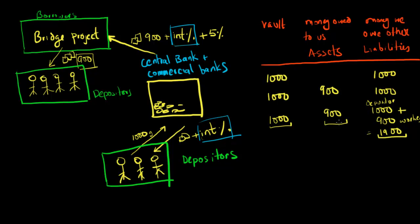So you might look at the fact that there's only 1,000 gold coins actually sitting in this vault, but 1,900 obligations that the banks have towards depositors, and you might think that the banks have just effectively created money out of thin air.